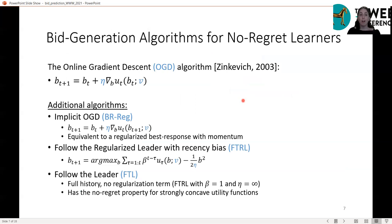We mainly focus on Online Gradient Descent (OGD), which states that the bidder updates his bid at every step in the direction of the gradient of his utility from the previous step, with step size eta. We estimate eta for each player from his data. We also consider three additional algorithms that differ in terms of their regularization terms and whether the bidder responds to the full history of auctions or just the recent history.